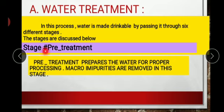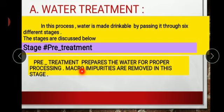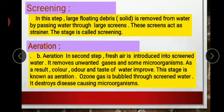The number one stage is pre-treatment. In this stage, the water is being prepared for processing — all the micro-impurities are being removed. There are six stages of water treatment in total.